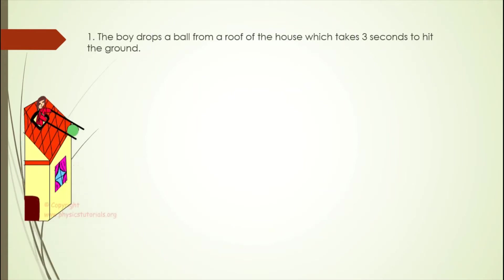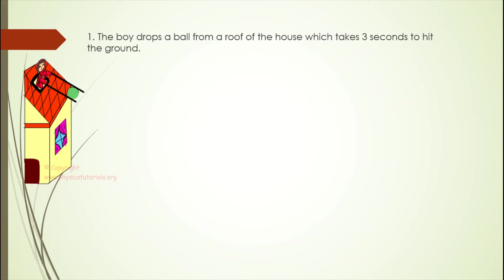First example: A boy drops a ball from the roof of a house, which takes 3 seconds to hit the ground. What are the given and what is required in the problem? The given: we have 3 seconds, which is the time, and the constant gravity, 9.8 meters per second squared. What the problem is asking is the velocity of the ball.